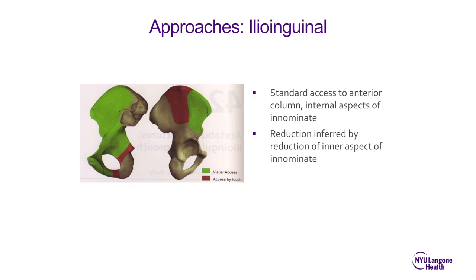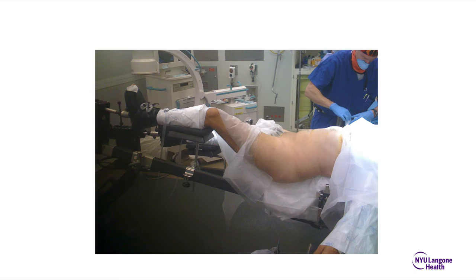For the ilioinguinal approach, it gives you access to the anterior column, the internal aspect of the innominate bone, and reduction of the acetabulum is achieved indirectly by reduction of the inner aspects of the innominate bone. The patient is positioned on a fracture table with the hip flexed to relax the iliopsoas muscle, which you are constantly working underneath. If that muscle is tight with the leg fully extended, you will not have access to the true pelvis.